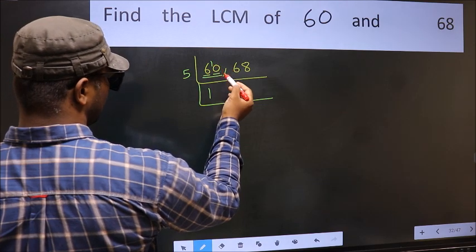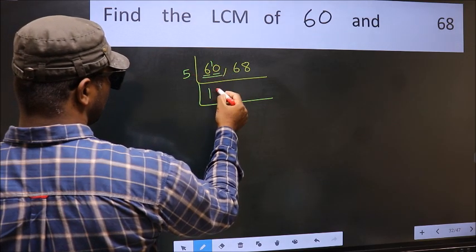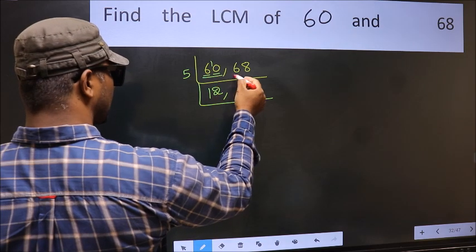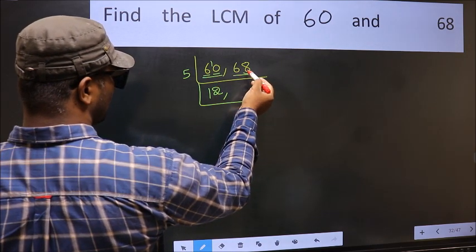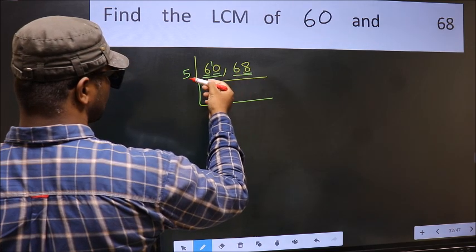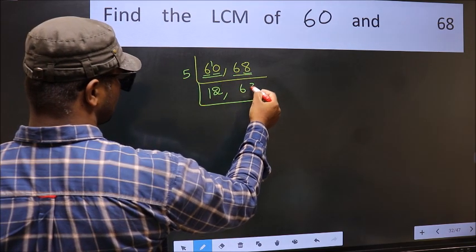When do we get 10 in the 5 table? 5 times 2 is 10. The other number is 68. Last digit is neither 0 nor 5, so this is not divisible by 5. So we write it down as it is.